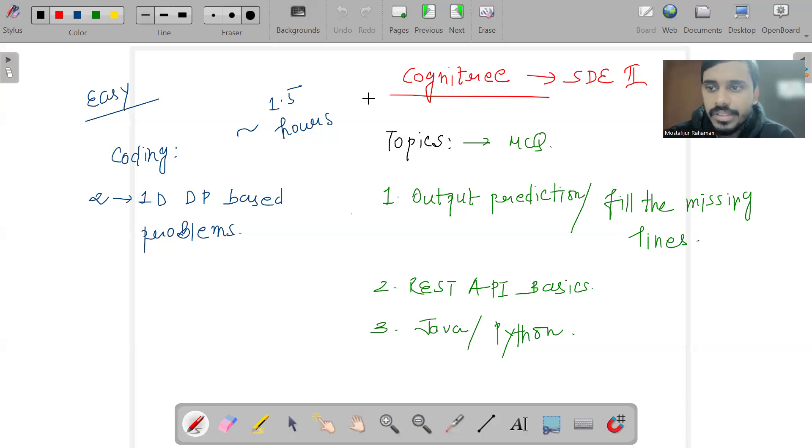There were MCQs and coding problems as well. Overall it spanned about 1.5 hours. Coming to the MCQs, that was the largest section - output prediction and filling the missing code lines in the code snippet for a particular output.